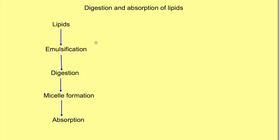Digestion and absorption of lipids occurs in various stages. Lipids first undergo emulsification, where they are broken down into small particles. Then there is digestion, which involves hydrolysis of ester linkages of lipids. Then there is micelle formation, and finally absorption.